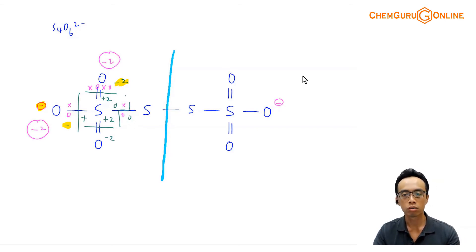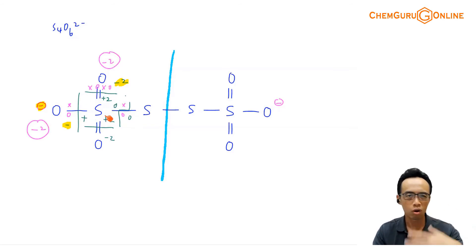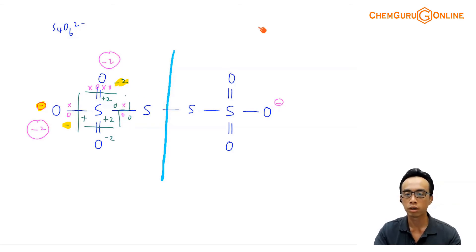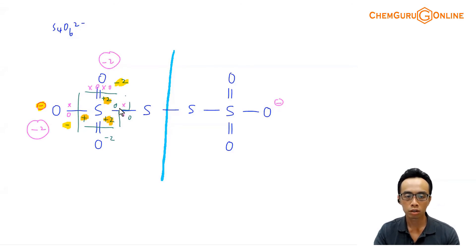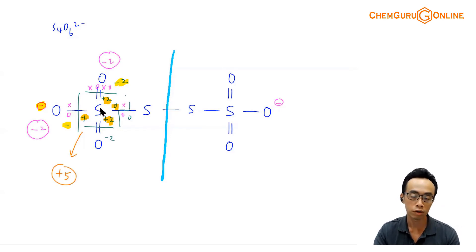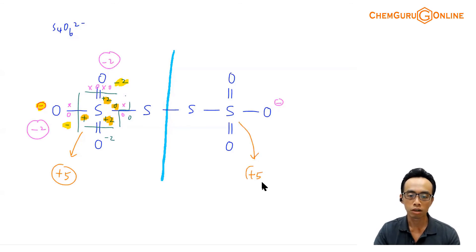Now we can determine the oxidation state of the outer sulfur, which is bonded to all the oxygen atoms. Total charge acquired: plus 1 from the single bond O, plus 2 from one double bond O, plus 2 from the other double bond O, and 0 from the S–S bond. Total charge acquired is plus 5. So the oxidation state of this outer sulfur is plus 5. The other outer sulfur, being a mirror image, is also plus 5.